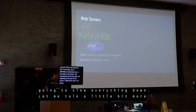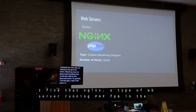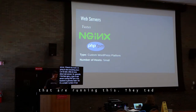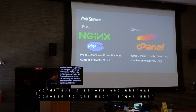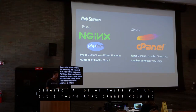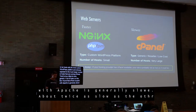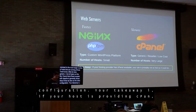Generally, I find that Nginx running PHP-FPM in the backend is faster, but it's used by fewer hosts — typically ones with a more custom WordPress platform. A much larger number of hosts run cPanel, which tends to be more generic. I've found that cPanel coupled with Apache is generally slower — about twice as slow as the Nginx/PHP-FPM configuration. So your takeaway is: if your host is providing cPanel, your site probably isn't as fast as it could be.